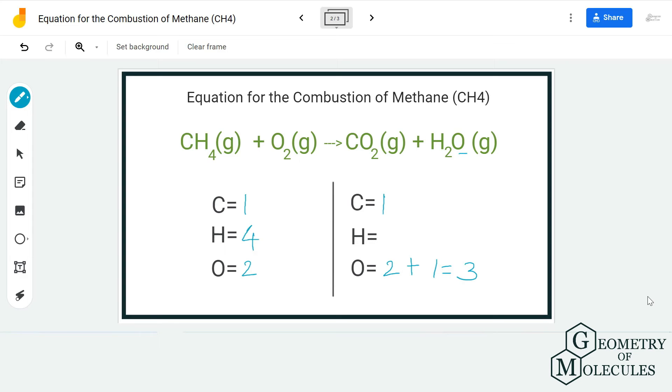To balance the hydrogen atoms, I am going to add coefficient 2 before H2O. Now I will have four hydrogen atoms, and we have balanced the hydrogen atoms on both reactant and product sides.